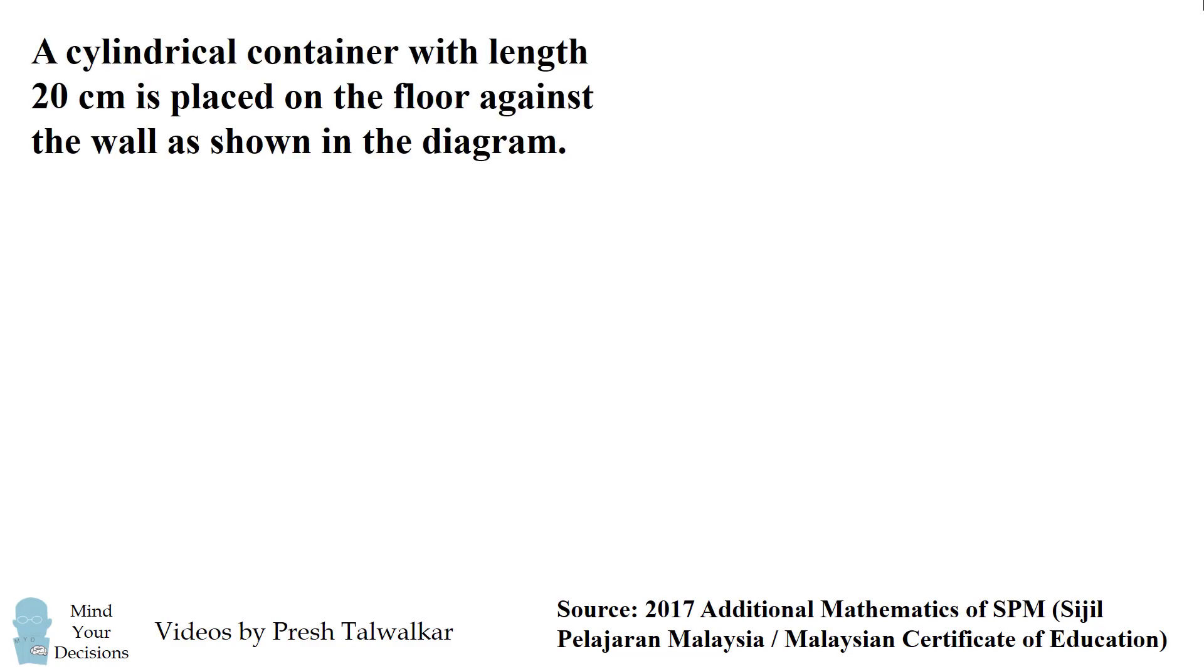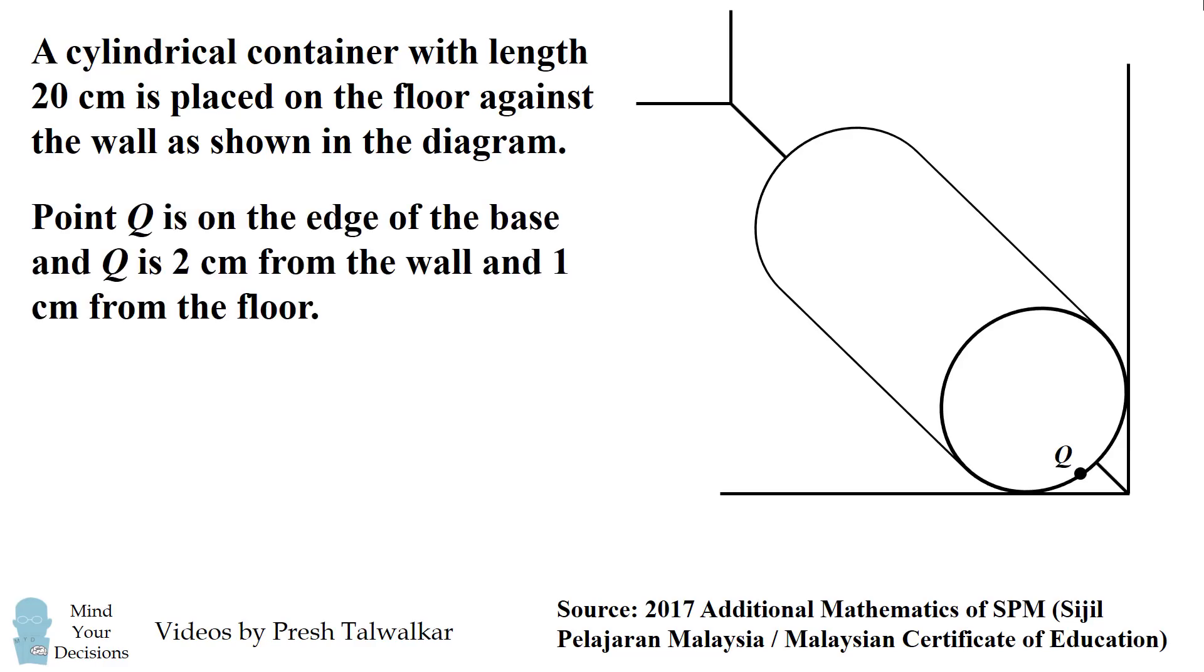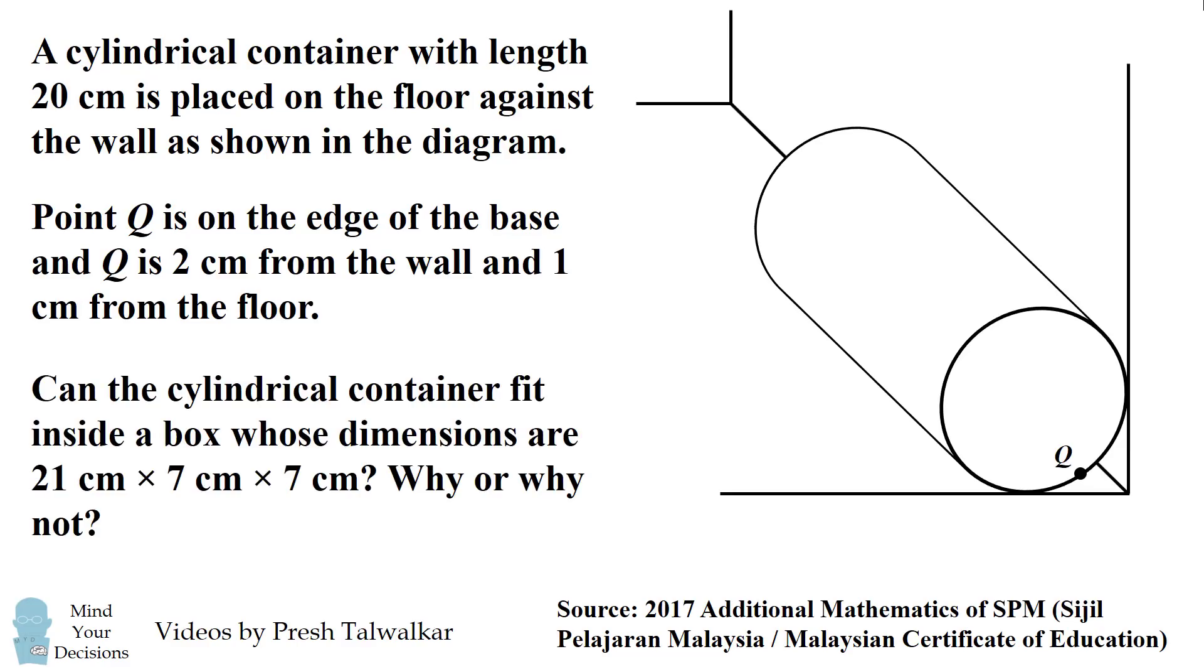A cylindrical container with length 20 cm is placed on the floor against the wall as shown in the diagram. Point Q is on the edge of the base, and Q is 2 cm from the wall and 1 cm from the floor. Can the cylindrical container fit inside a box whose dimensions are 21 cm by 7 cm by 7 cm? Why or why not?